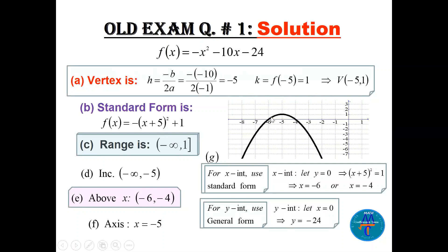The graph is above the x-axis from -6 to -4. Where do we get -6 to -4? From the x-intercepts. For x-intercepts, set y = 0 in the standard form: (x + 5)² = 1, so x = -4 or x = -6.